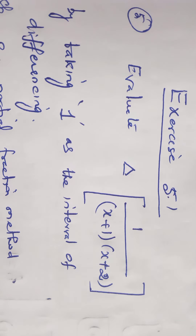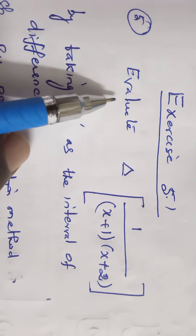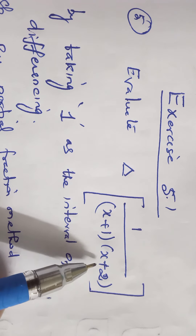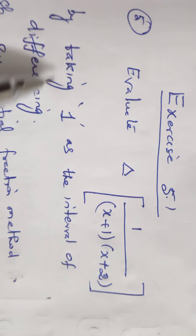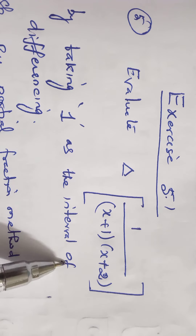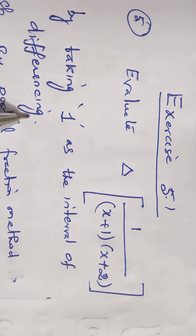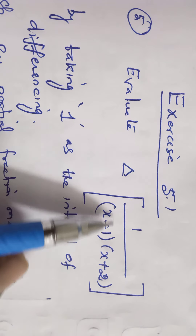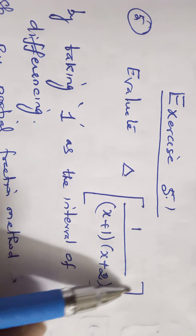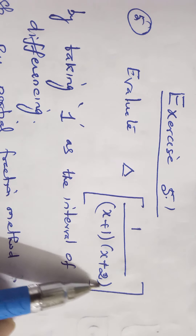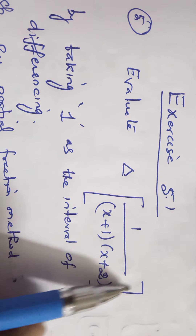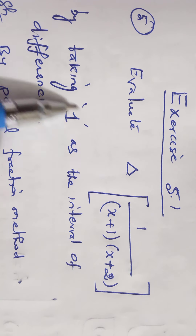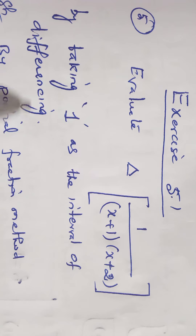Exercise 5.1, problem number 5: evaluate delta of 1 divided by (x+1)(x+2), by taking 1 as the interval of differencing. Solution: we compute delta of this expression using the forward difference operator formula with h equal to 1 as the interval of differencing.